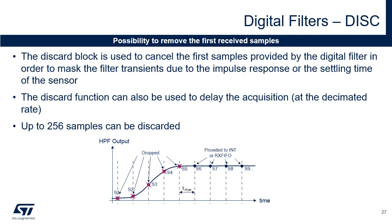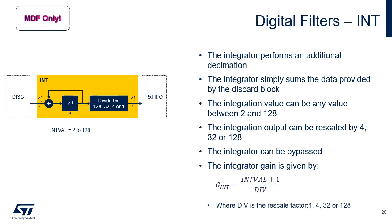Up to 256 samples can be discarded. In the example shown in the figure, the discard function is used to drop the first five samples, S1 to S5, provided by the digital filter. The first sample transferred to the RX FIFO or the INT block if enabled is S6. The integrator performs an additional decimation. The integrator simply sums the data provided by the discard block. The integration value can be any value between 2 and 128. The integration output can be rescaled by 4, 32 or 128. The integrator gain depends on the integration value interval and the rescale factor. To bypass the integrator, initialize the interval value to 0.